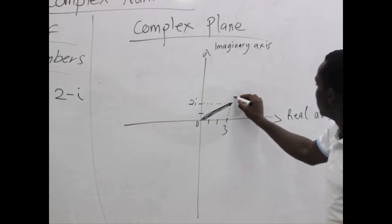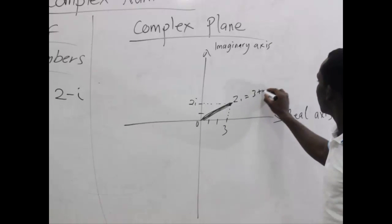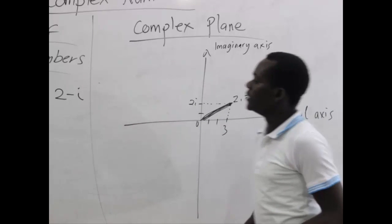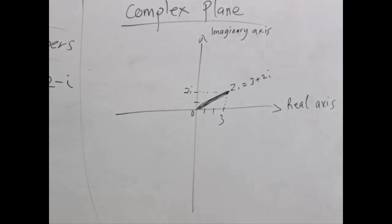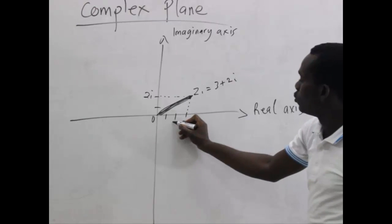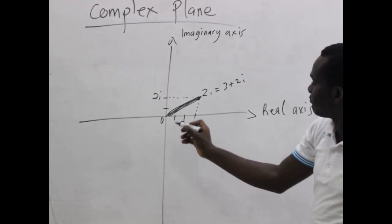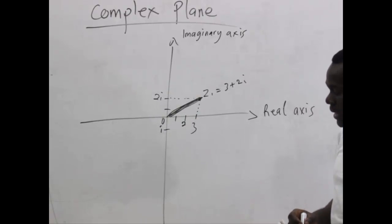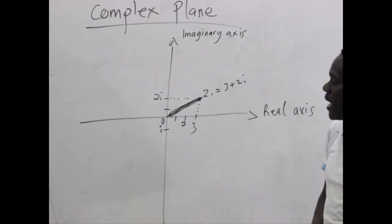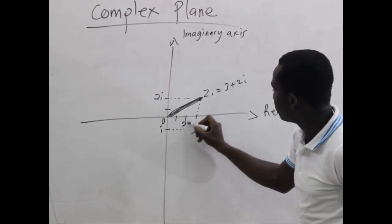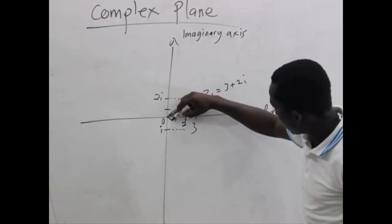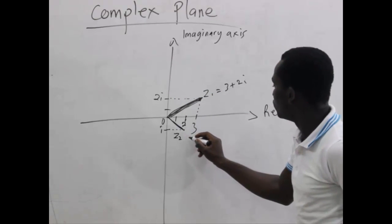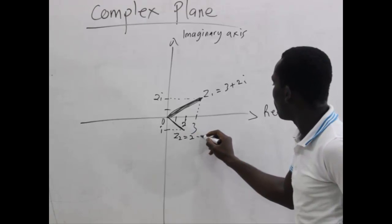So this line becomes z1, equal to 3 plus 2i. Now for z2, which is 2 minus i: we locate 2 on the real axis, and go one unit below the horizontal axis for the imaginary part. So this line is z2, which is 2 minus i.